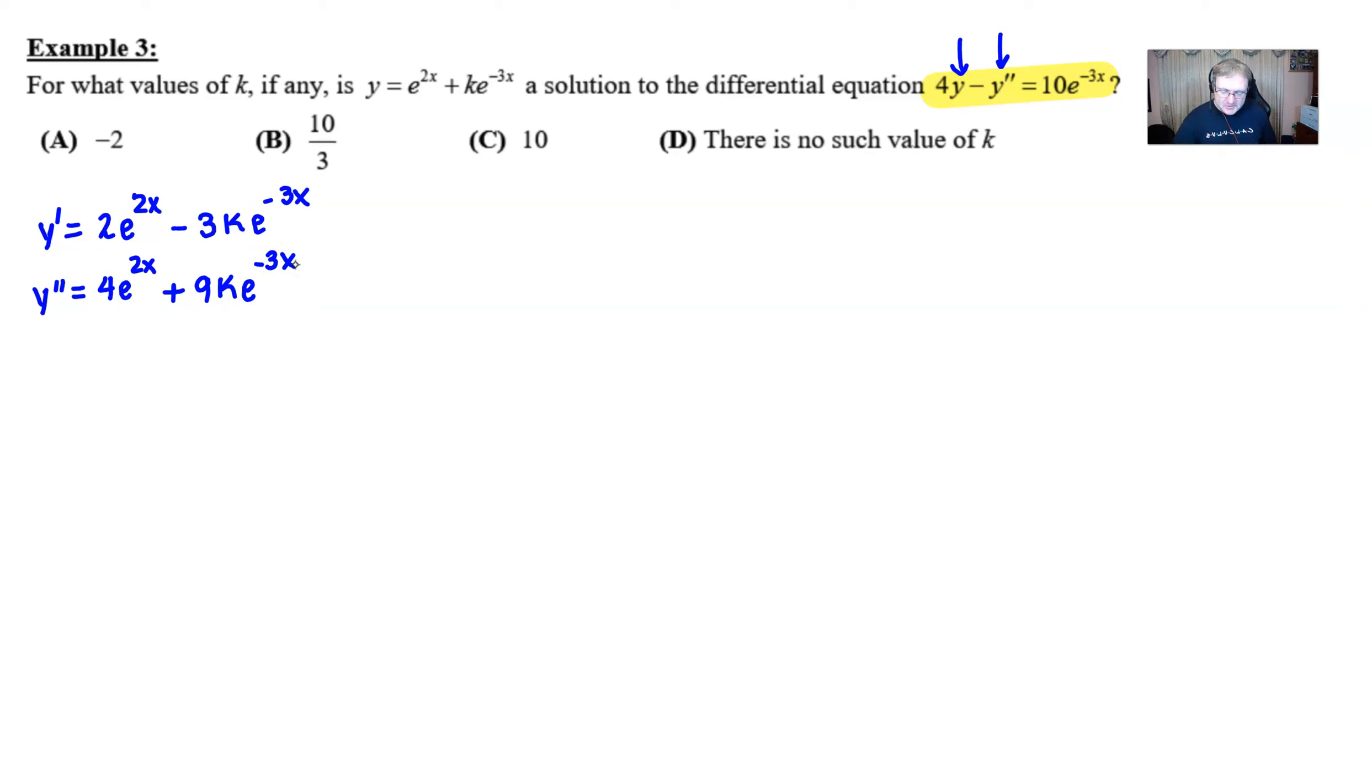Luckily, we don't have to take any more derivatives. So, moment of truth. Let's rewrite our differential equation starting with 4. Multiply by the y, which is e to the 2x plus ke to the negative 3x. Subtract. Now, this could be a little tricky here. We're going to subtract. I can end my parenthesis here. We're going to subtract the quantity of the y double prime, which is 4e to the positive 2x plus 9ke to the negative 3x.